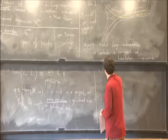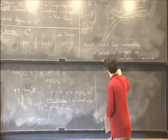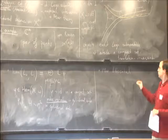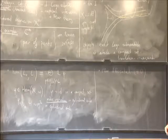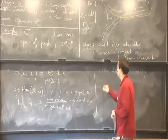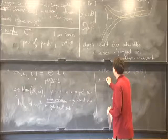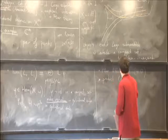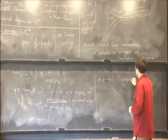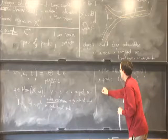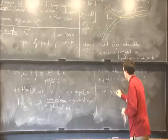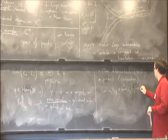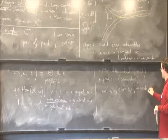There's the Floer differential, which counts holomorphic strips as usual, but for the purpose of my talk it will be zero. What I'm more interested in is the Floer product, which gives me composition in this category. I want to define a product that takes a morphism from L0 to L1 and one from L1 to L2 and outputs a morphism from L0 to L2.